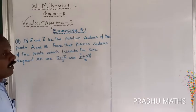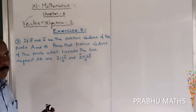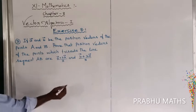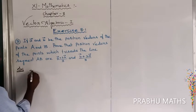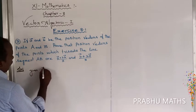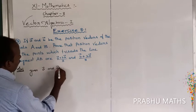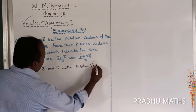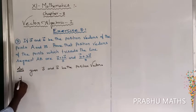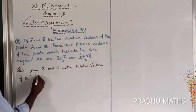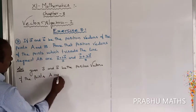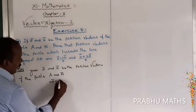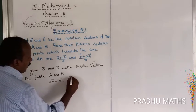So, given that a vector and b vector are the two position vectors of the line AB. Solution — given that a vector and b vector be the position vectors of the points A and B. That is, OA vector is equal to a vector, and OB vector is equal to b vector.